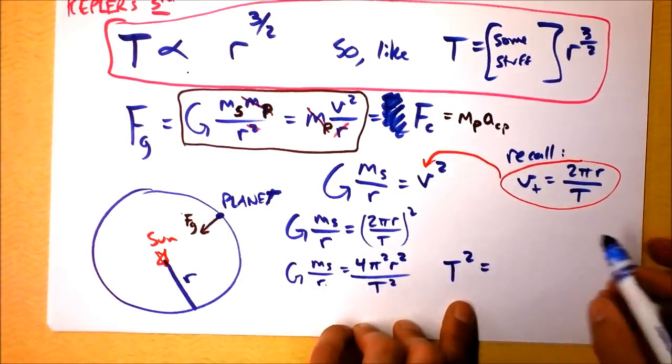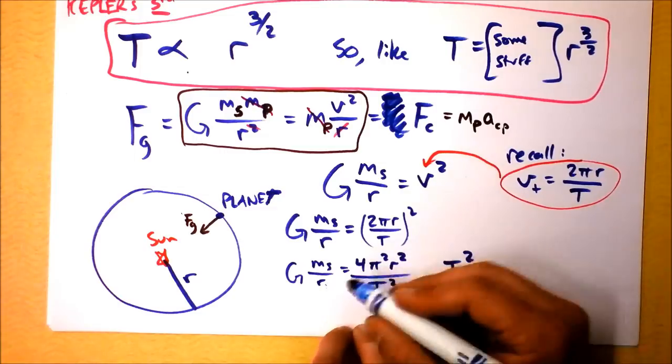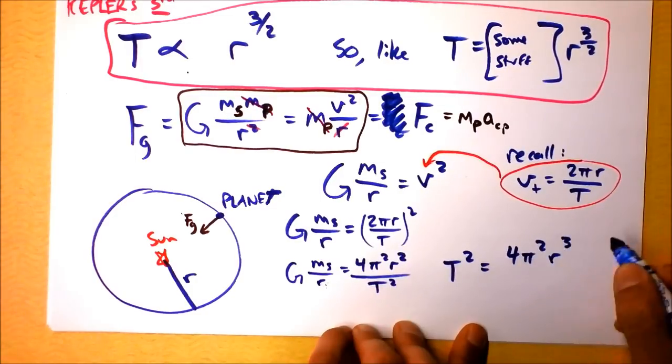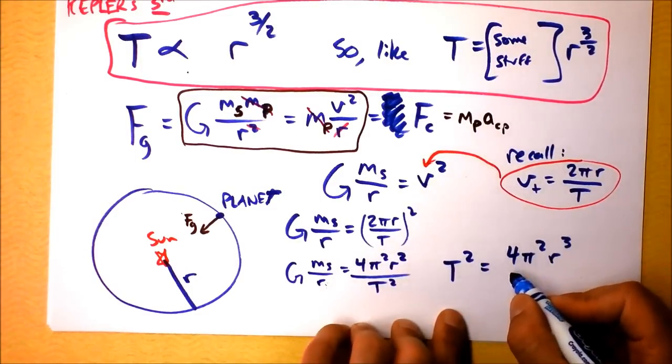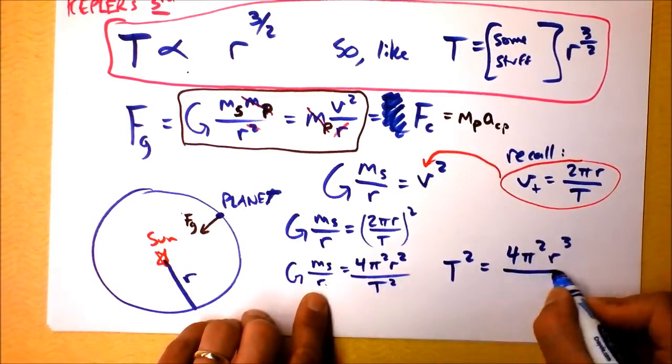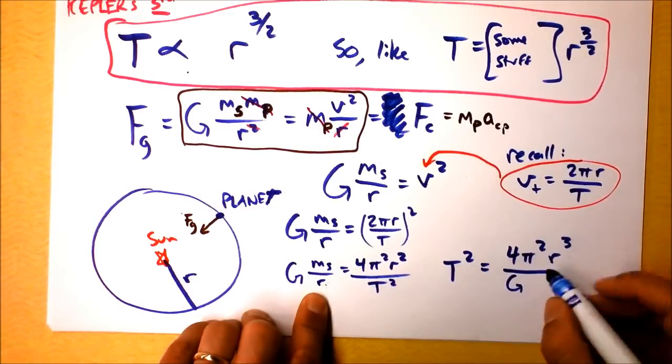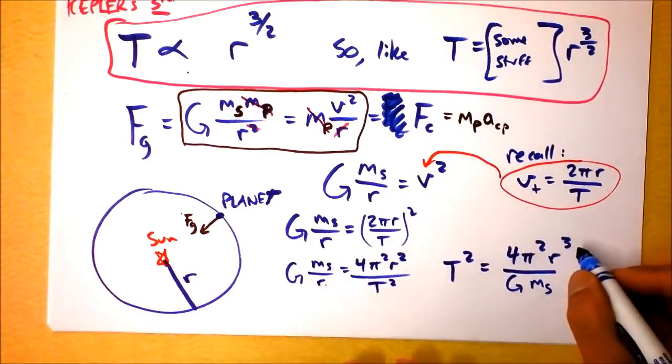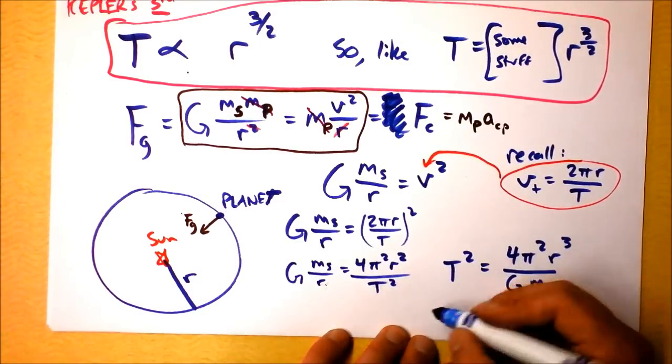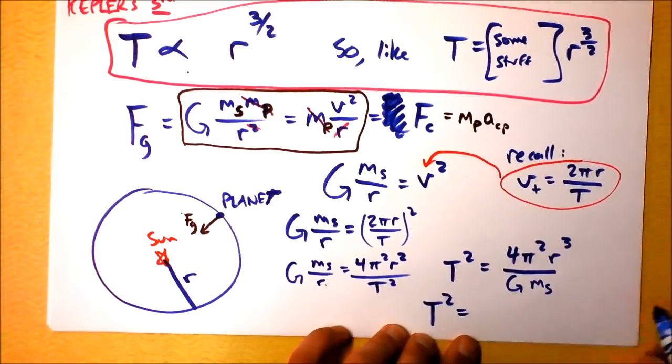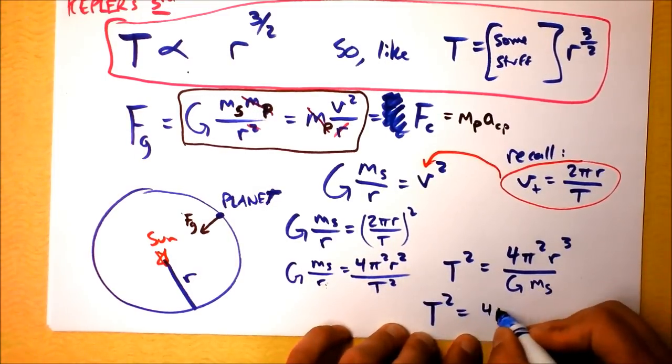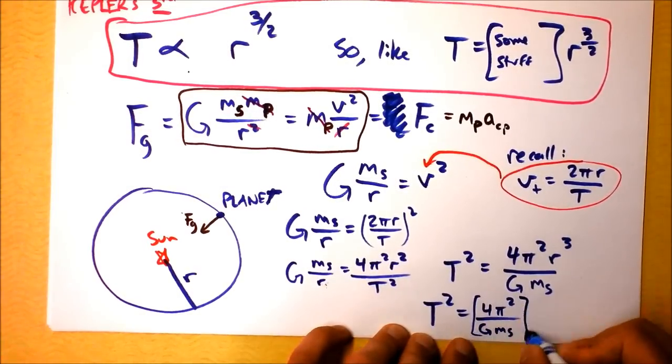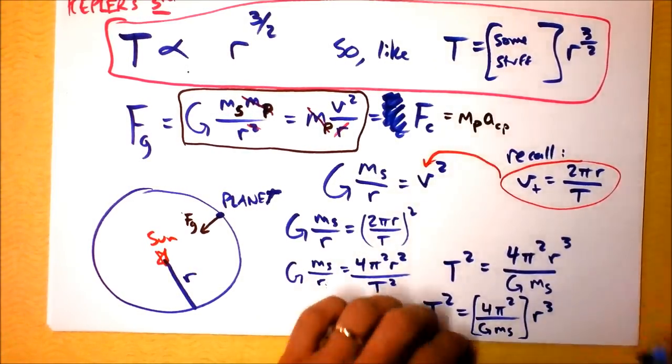Seems like t squared is going to be equal to, let's see, we've got 4 and pi squared and r cubed. Then we're going to divide it by, we have to divide it by capital G and the mass of the sun. Notice, notice what this equation says. It says t squared equals 4 pi squared over G times the mass of the sun times r cubed.